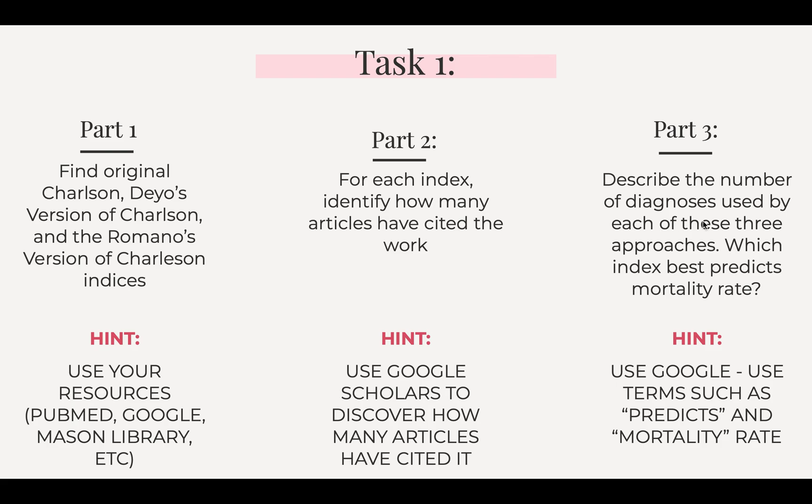Part three is to describe the number of diagnoses used by each approach and identify which index best predicts mortality rate. Use Google and the different information I talked about earlier — that will help you infer which index best predicts mortality rate. Go ahead and pause here, do as much as you can, and then I'll see you back for the next slide.